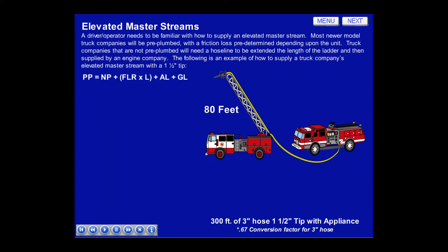First, let's set this problem up. Pump pressure equals nozzle pressure plus the friction loss rate times length plus appliance loss plus gravity loss. So pump pressure equals 80 for nozzle pressure for a smoothbore master stream, plus the friction loss rate (to be solved), times 3 for 300 feet of hose, plus 15 psi for appliance loss, plus 40 for the gravity loss.